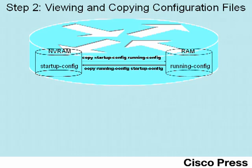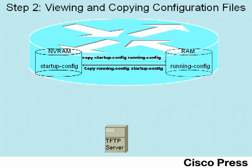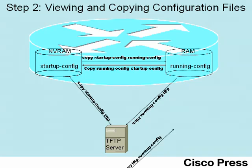Another command that you might find useful is copy startup-config running-config, which copies the startup configuration file over into RAM. However, in some cases that copy does not replace the running config — it only adds to it — so you have to be a little careful. It's also good practice to keep a copy of your configurations outside the router using a TFTP server. You can copy the running config or startup config over to the server, and later use copy tftp running-config to restore an old configuration from the server back into the router.